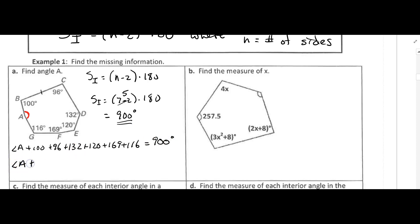We have angle A plus 733 is equal to 900, and we'll subtract 733 from both sides. And we should get that angle A is equal to 167 degrees.